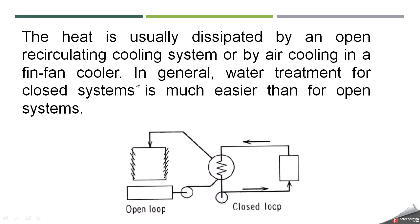Water treatment for a closed system is much easier than for open systems, which is an advantage. The schematic shows a closed loop with a pump that circulates water to the main process, where it absorbs heat. The heated water then rejects its heat to an open loop system. Two loops are involved because after the temperature increases, if we do not cool the water it will not be able to cool the main process further.